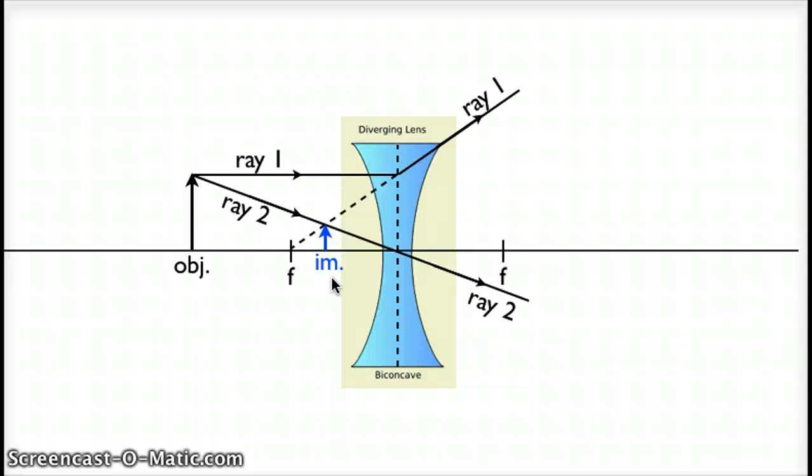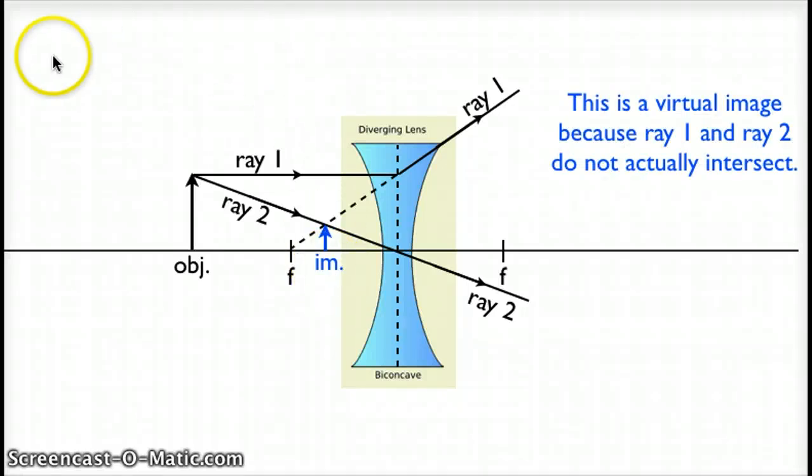I mentioned that this is a virtual image. Not only does that mean that the image is on the virtual side of our lens, but being a virtual image also means that ray one and ray two do not actually intersect. This intersection is between ray two and the imagined part of ray one being traced back. There's no intersection between the actual ray one and the actual ray two. That is also a characteristic of a virtual image.